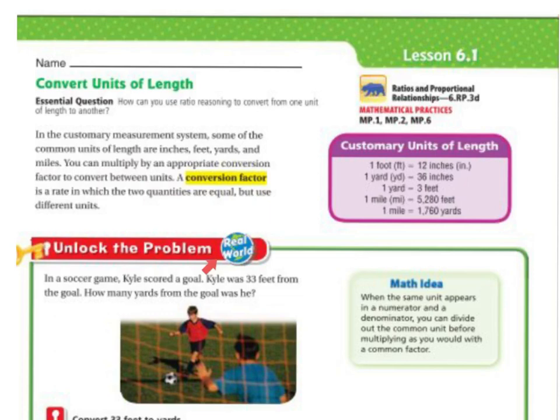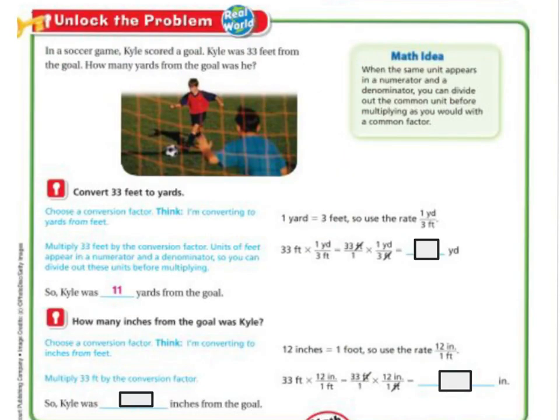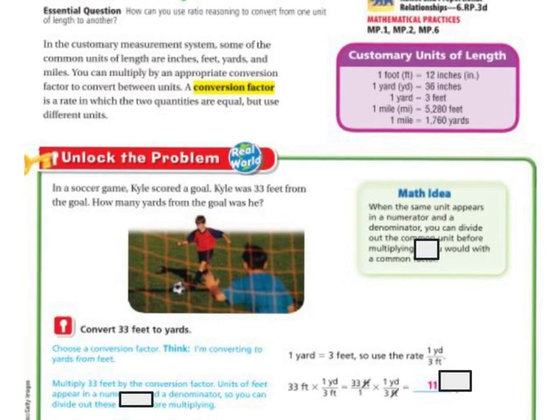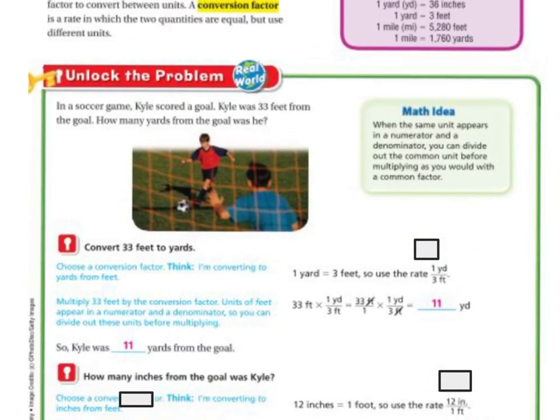So let's unlock the problem. In a soccer game, Kyle scored a goal. Kyle was 33 feet from the goal. How many yards from the goal was he? We're going to have to convert 33 feet to yards. And remember that up here, one yard is equal to 3 feet.